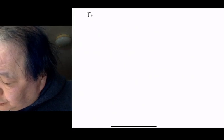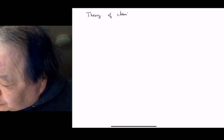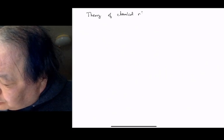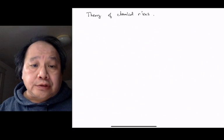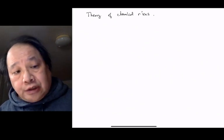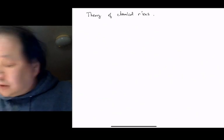In this lecture, we begin presenting the theory of chemical reactions. And the key to understanding the theory of chemical reactions is to recognize that it is the electrons which are responsible for chemical reactions to occur.